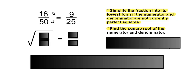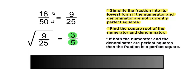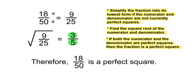Find the square root of the numerator and denominator. So we'll find the square root of 9 over 25. The square root of 9 is 3, and the square root of 25 is 5. If both the numerator and denominator are perfect squares, then the fraction is a perfect square. The numerator and denominator are both perfect squares. Therefore, 18 over 50 is a perfect square.